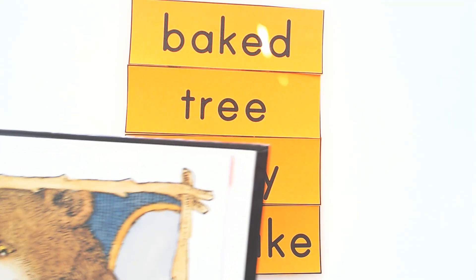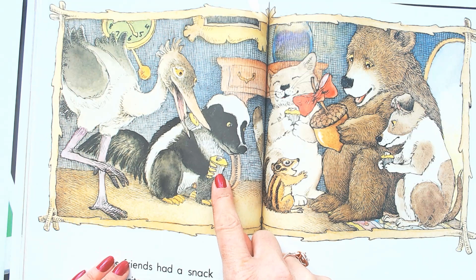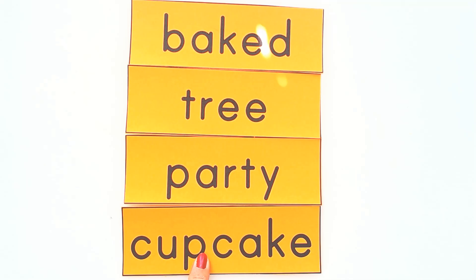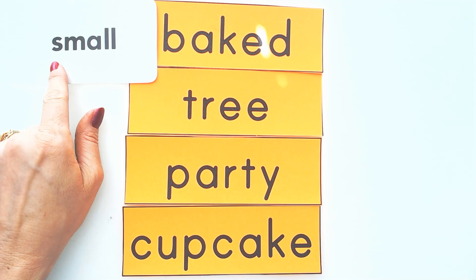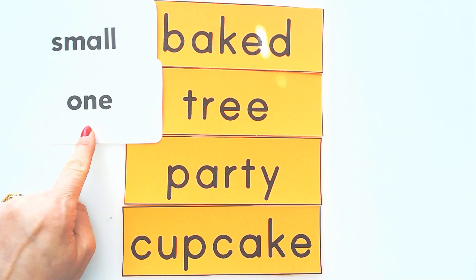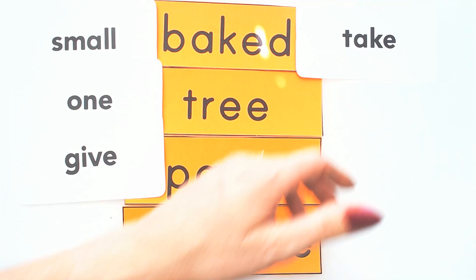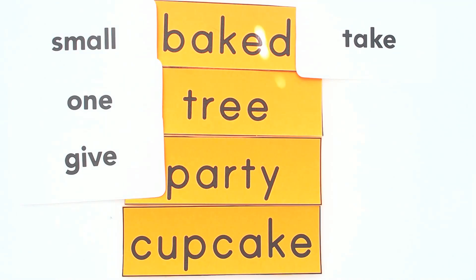Let me see if there's a better picture — oh, that's a better picture of cupcakes. Hope you can read all of those words: baked, tree, party, and cupcakes. And these we're just going to review small, small ones. Can I have one of your cupcakes? Can you give me one of your cupcakes? Give. Take. Yes, you can take one. Eat. Eat your cupcakes. Put. He put pictures of their faces on the cupcakes.